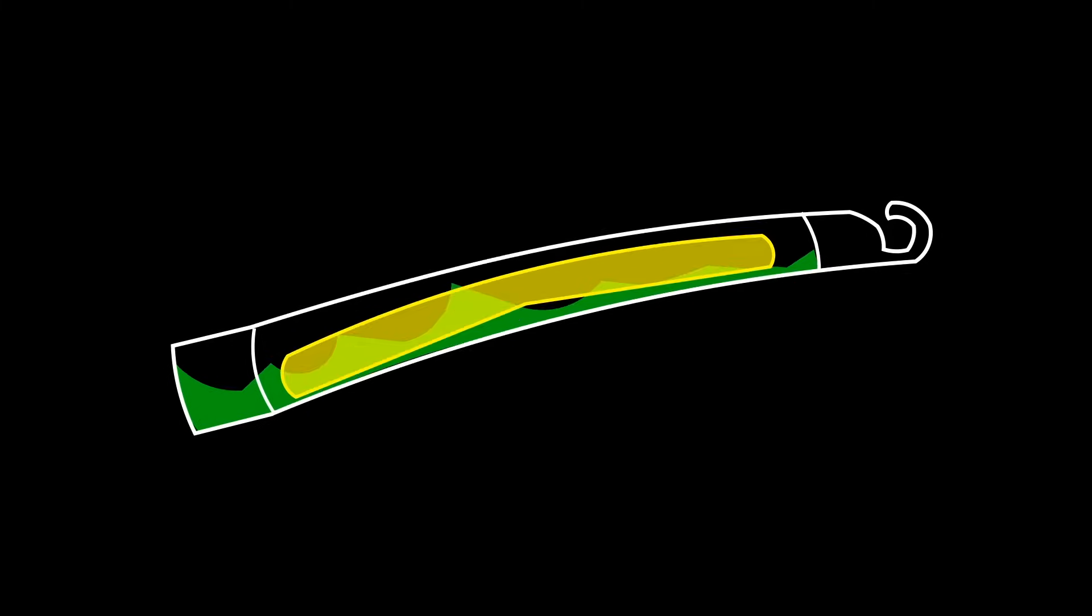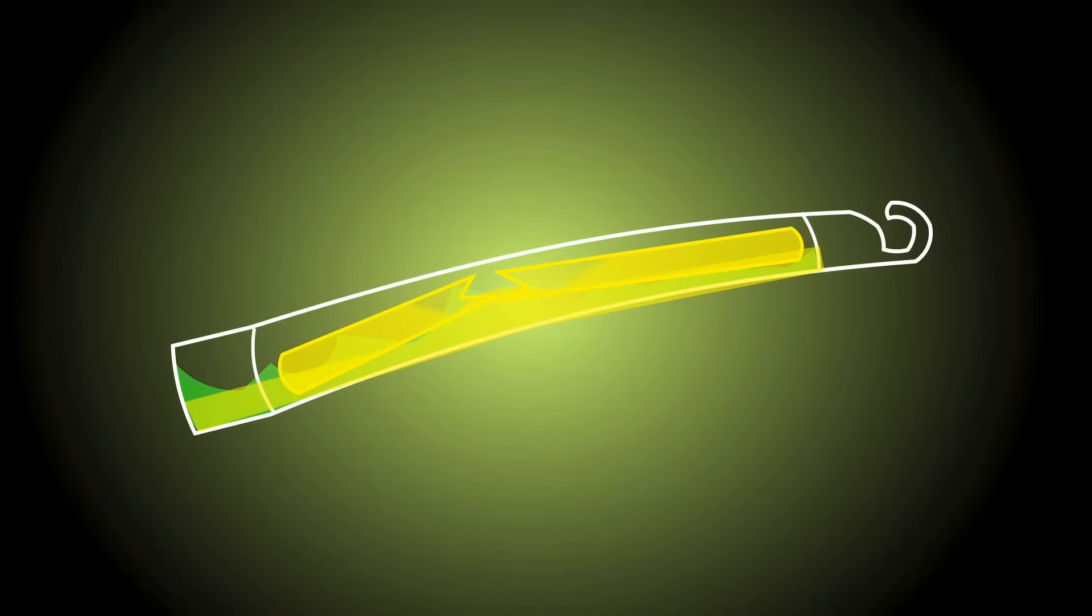When you gently bend the glow stick to get it started, you're actually breaking that small container open, causing the two substances to get mixed together. Mixing the two substances together is what makes the glow stick glow.